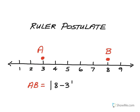So eight minus three, or I could say three minus eight. It doesn't matter because absolute value distance is always positive. So this is, of course, five. So that's basically the ruler postulate when we have points assigned to coordinates.